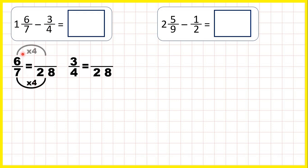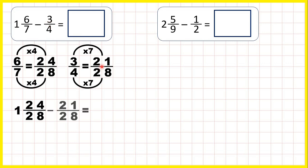7 times 4 is 28, 6 times 4 is 24, 4 times 7 is 28, 3 times 7 is 21. So now we can rewrite our question. Instead of 1 and 6 7ths, we can write 1 and 24 over 28, and instead of subtracting 3 quarters, we can subtract 21 over 28.